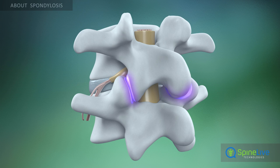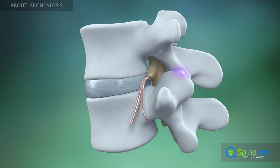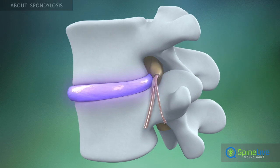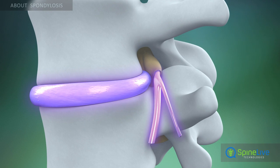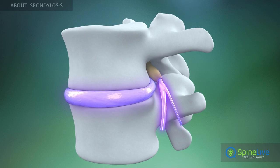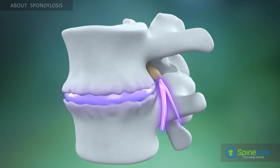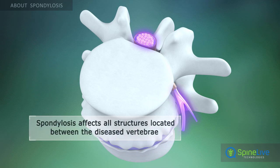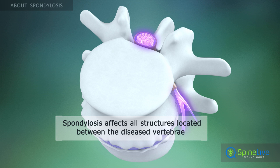Osteophytes and the decrease in space between the vertebrae cause pathological processes involving all structures located between the affected vertebrae, such as facet joints, spinal discs, nerve roots, and the spinal cord.